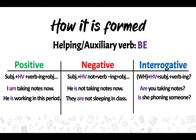For a negative sentence, we add 'not' to the helping verb. The formula is: subject + verb to be + not + verb-ING + object + time expression. For example: he's not taking notes now. They are not sleeping in class.